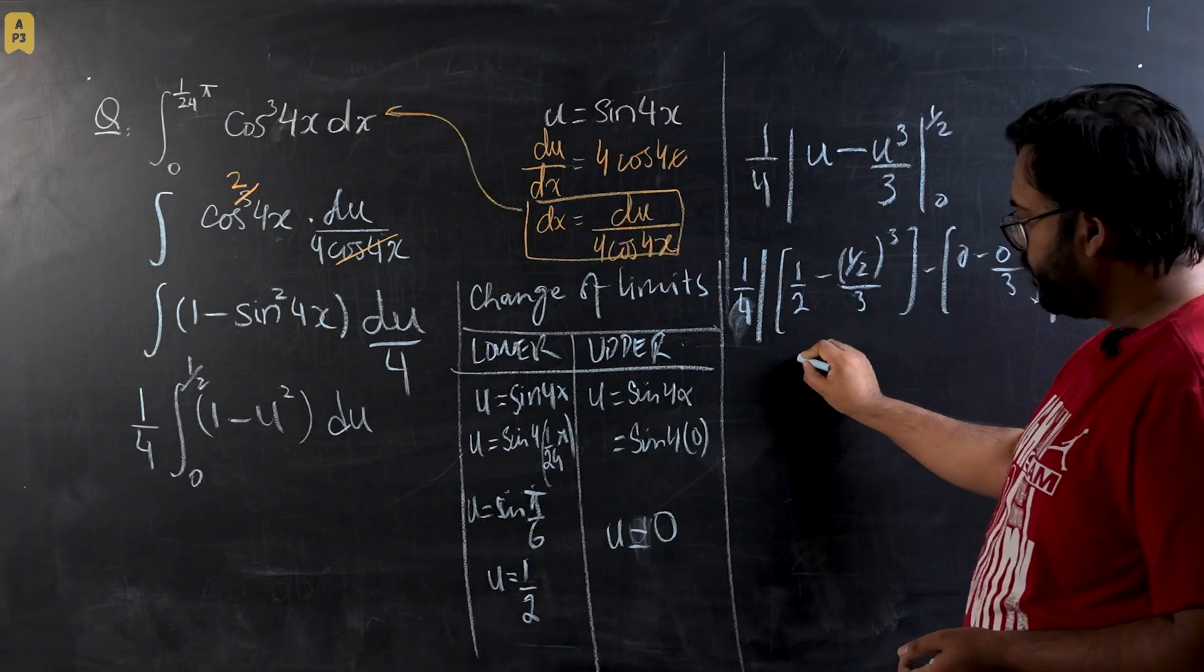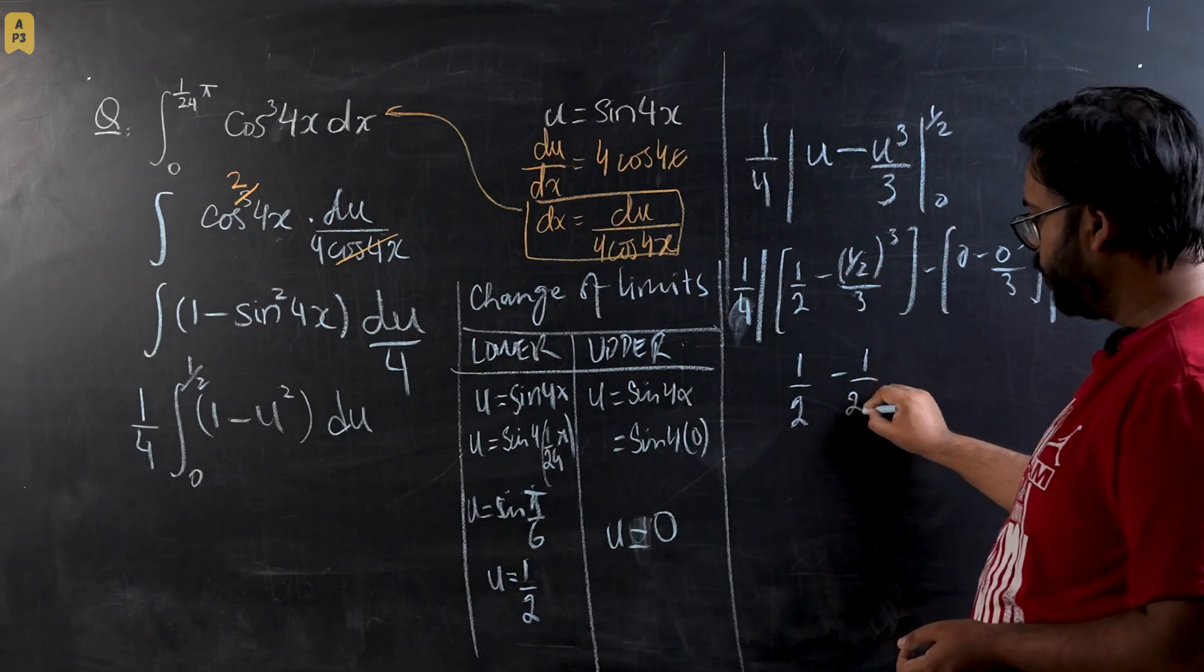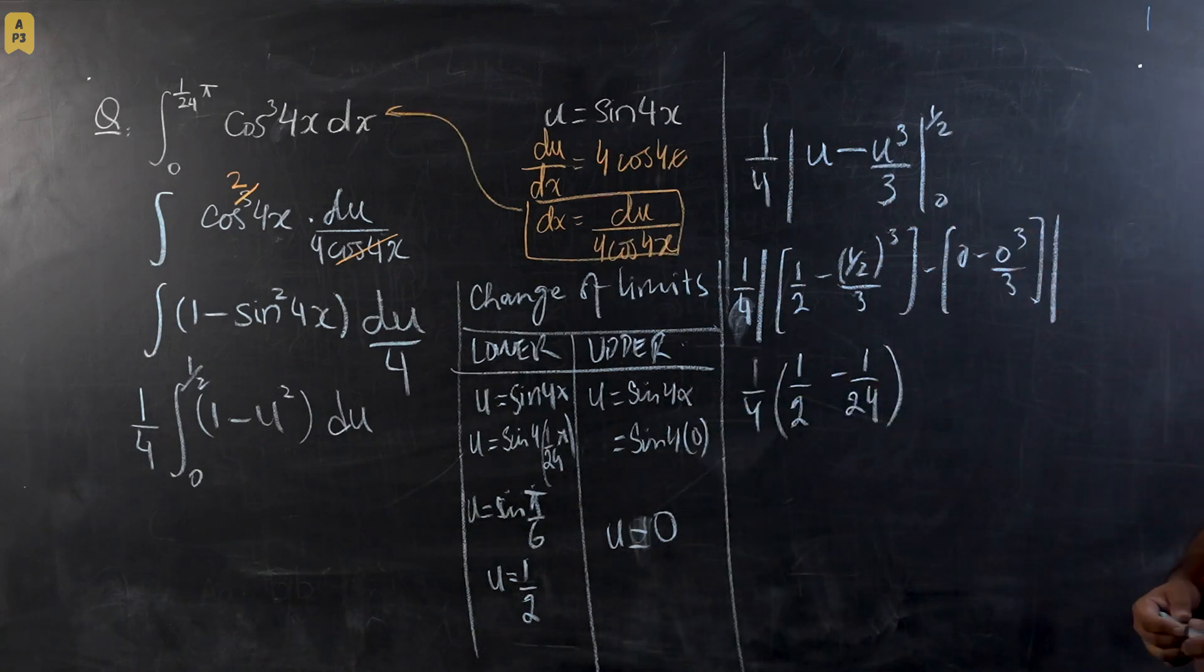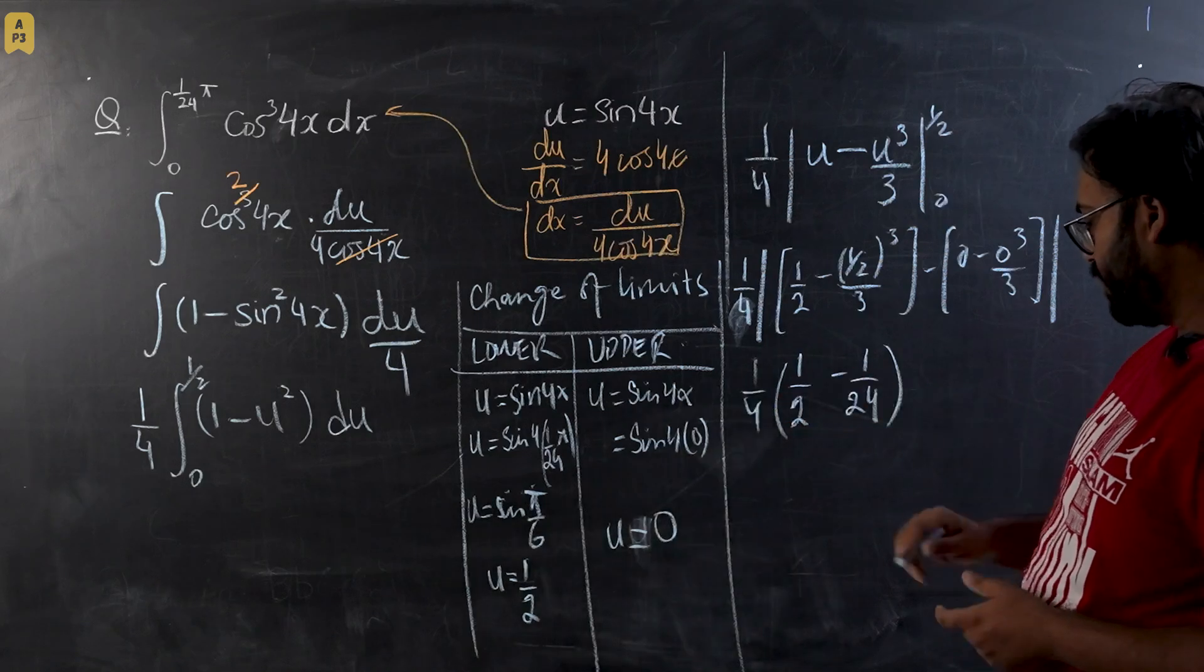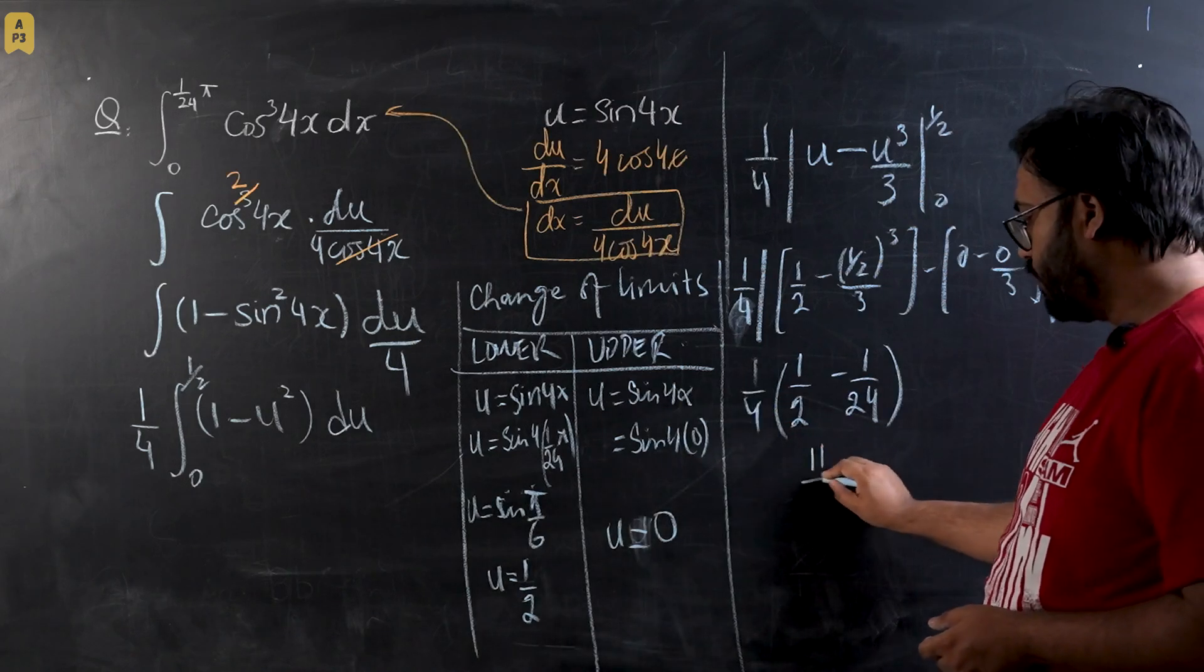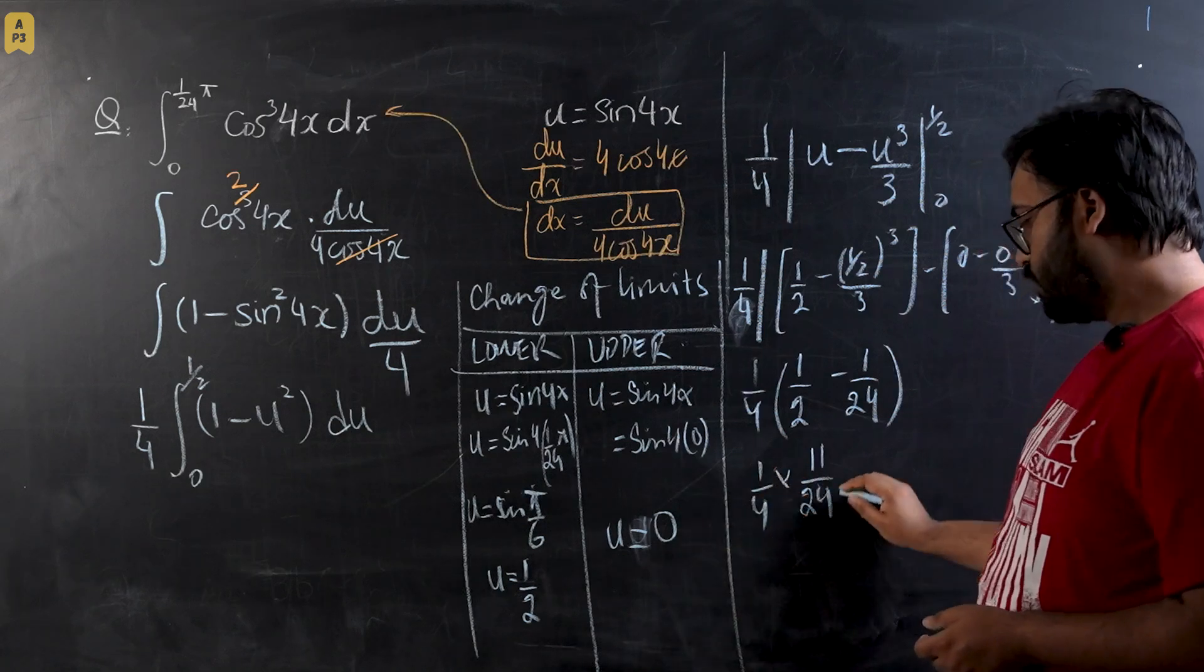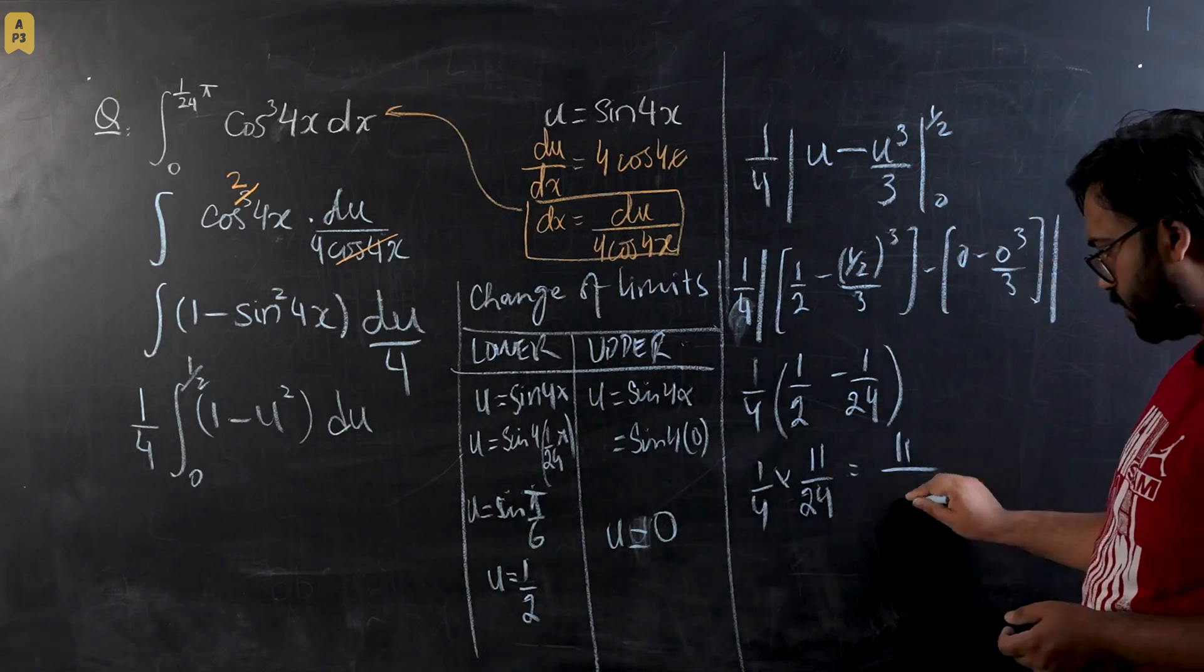So this will be 1/2 - 1/24, so let's take the denominator. This would be 12 - 1 is 11 over 24 times 1/4, and this would be our final answer 11/96.